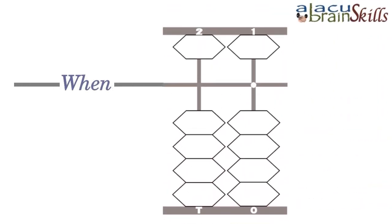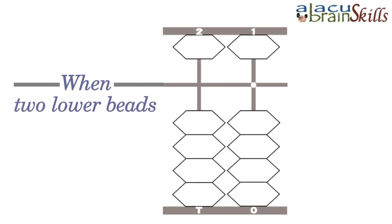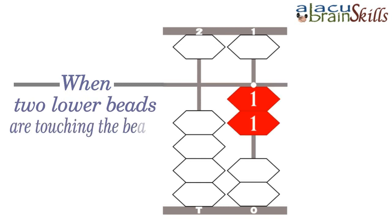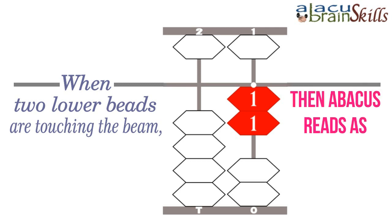When two lower beads are touching the beam, then the Abacus reads as 2.